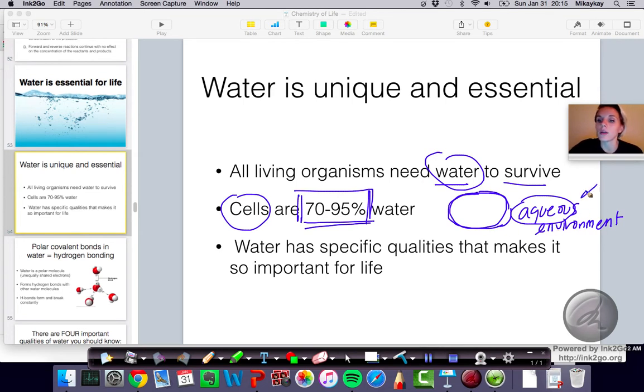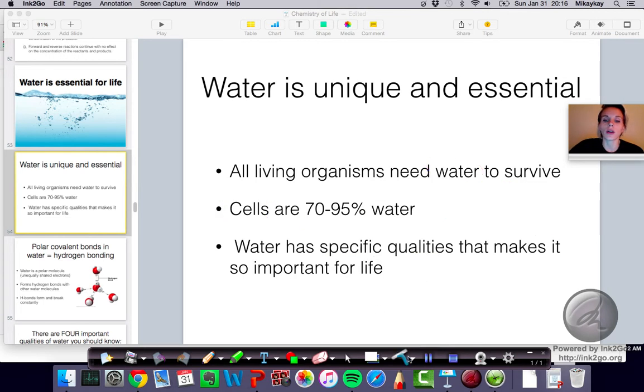But the reality is that even if you're looking at terrestrial animals, like humans, or dogs, or cats, we all are made out of cells, and we're actually all mostly water. Because water has specific qualities, we see life existing the way that it does. We're going to talk about what those qualities are.